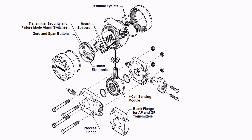Next is the base board — it basically connects the power supply side to the smart electronics board, and it also connects the sensor module to the electronics. So it performs two functions: interfacing the power supply with the smart electronics board, and sending the signal from the sensor to the smart electronics.